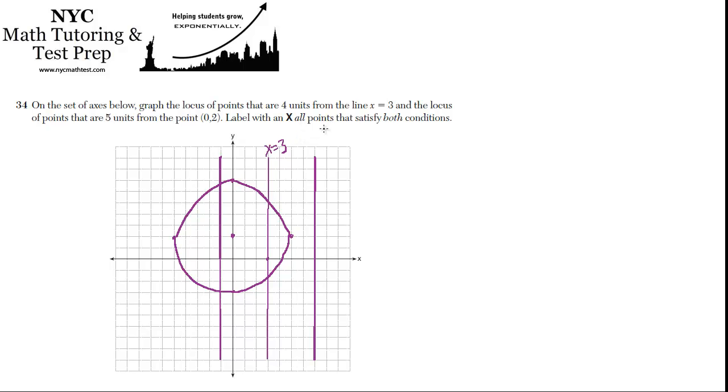And now lastly, they want us to label with an x all the points that satisfy both conditions, which is the intersection of those two loci. So where do they intersect? They intersect here. So that's an x. And they don't intersect anywhere over here. The circle's not big enough to reach. So it's really just those two points, two intersections.